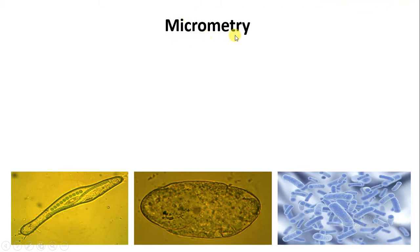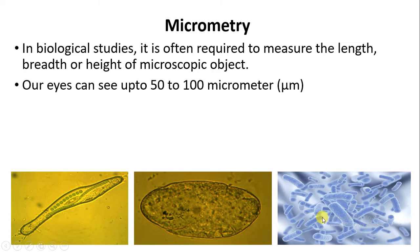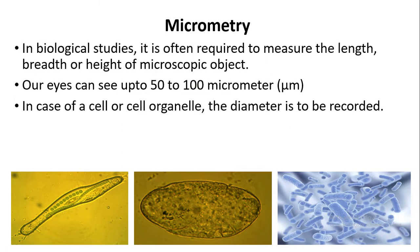Micro means small and metry means scale. We are going to use this method so that we can measure some of the microscopic organisms. Whatever we study in biology, we have to measure the length, breadth, and height of a particular microscopic organism. Our eyes can see up to 50 to 100 micrometers. So if any organism is below 50 micrometers in size, we do require a microscope and we do require micrometry so that we can know the dimension of a particular organism.